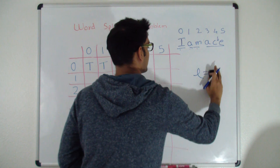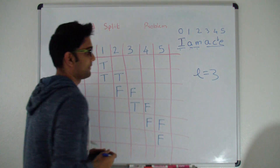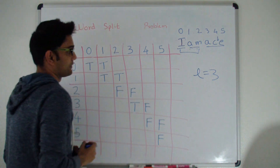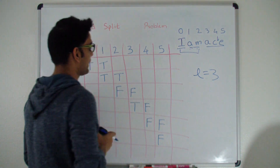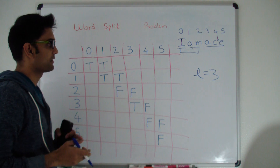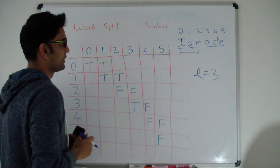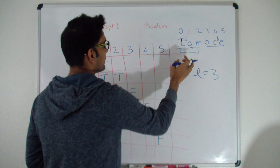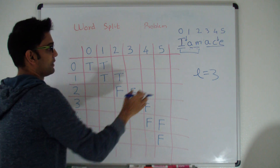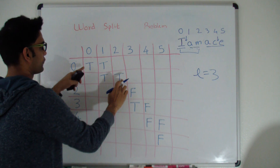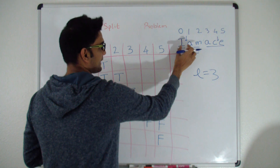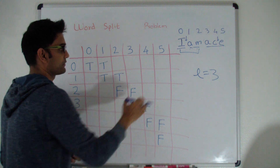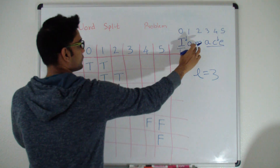Now L equals 3, looking at 3 characters at a time. For 'IAM': does IAM belong in the dictionary? No. We try splitting: if we split after I, then I is (0,0) which is true, and 'AM' is (1,2) which is also true. So IAM can be split into valid words — (0,2) is true. We indicate the split point is at index 0.